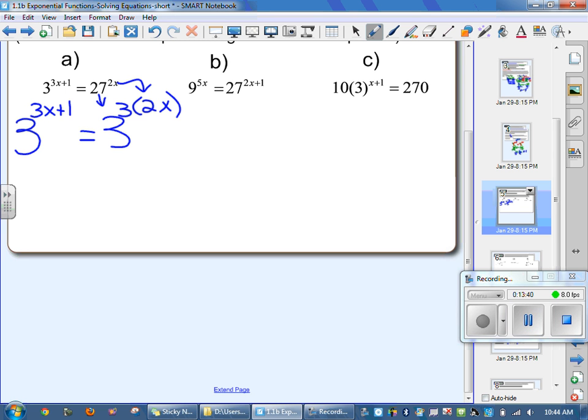So I'm going to write the step, but if you want to skip it, you more than welcome can. So I'm going to have 3 to the 3x plus 1 equals 3 to the 6x. Now if you knew that already, you could go straight to this next step, which is just 3x plus 1 equals 6x. Because you can drop your bases over here now that they're the same.